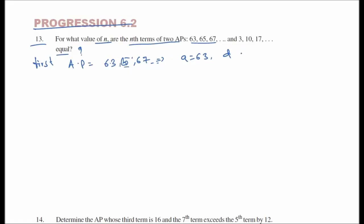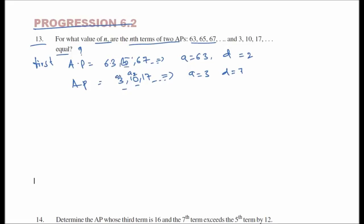The second AP is 3, 10, 17... so a is equal to 3 and d is equal to 7, because 10 minus 3 is equal to 7. Now, the nth term formula is a_n equals a plus (n minus 1) times d.